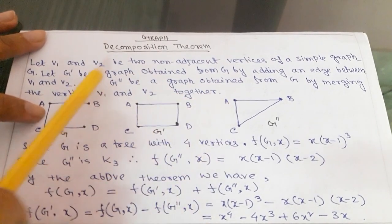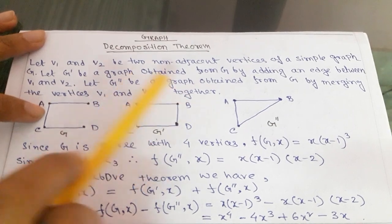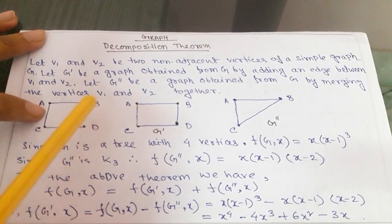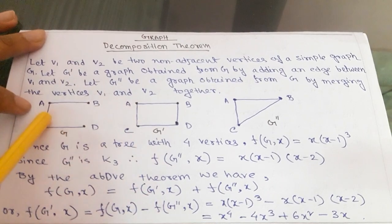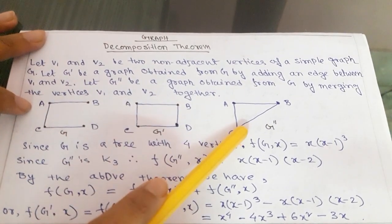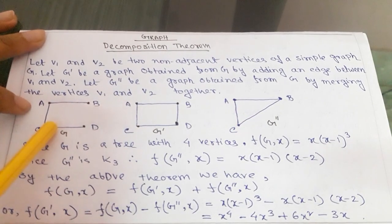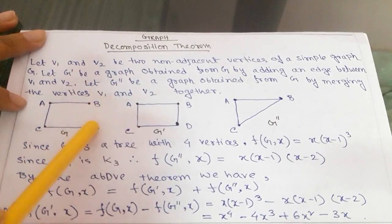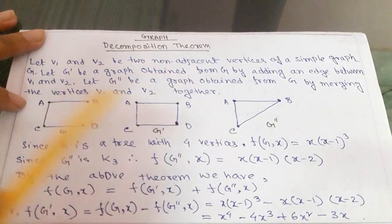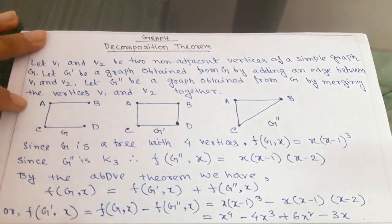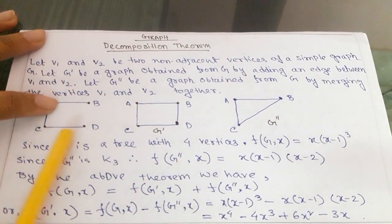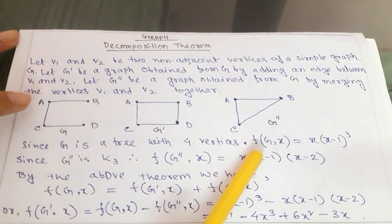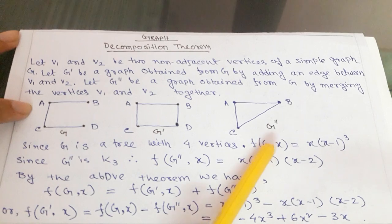G double dash is a graph obtained from G by merging the vertices V1 and V2. If you merge B and D, this is how G double dash looks. This graph is obtained from G by merging vertices V1 and V2 together. If you merge B and D, this graph will become this resulting graph. Since G is a tree with 4 vertices, we can see what happens after merging.